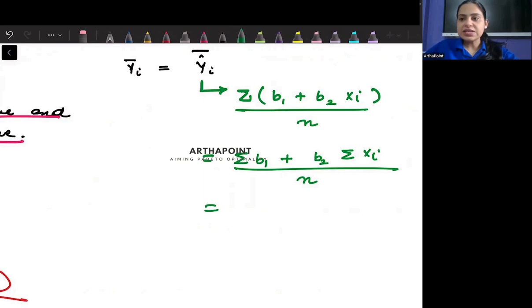So b1 is getting summed up n times. So this will be nb1 plus b2 summation xi by n. And this would have given me b1 plus b2 x bar.